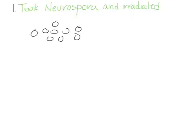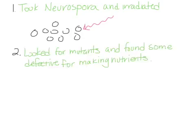In one of their very famous experiments, Beadle and Tatum took Neurospora, which is a fungus, and irradiated the cells to create mutants. They're not going to control what kind of mutations they generate, but the radiation should create some mutations and give them mutant phenotypes. When they analyzed their Neurospora, they found mutants that were defective for making nutrients. The cells can normally synthesize many of their own nutrients from inorganic materials, but these mutant cells could not — they had to be supplied with whatever nutrient they were defective for making, or else they would die.